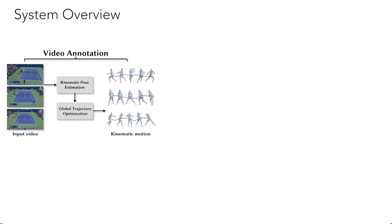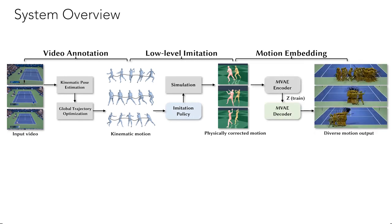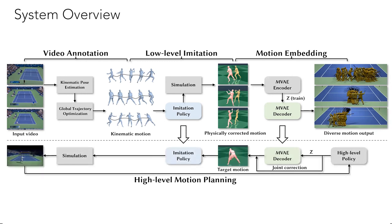To enable characters to learn skills from sports videos, we present a video imitation system that consists of four stages. First, we estimate kinematic motions from source video clips. Secondly, a low-level imitation policy is trained to imitate the kinematic motion for controlling the low-level behaviors of the simulated character and generate physically corrected motion. Next, we fit conditional VAEs to the corrected motion to learn a motion embedding that produces human-like tennis motions. Finally, a high-level motion planning policy is trained to generate target kinematic motion from the motion embedding and then control a physically simulated character to perform a desired task.